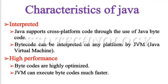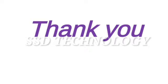Interpreted. Java supports cross-platform code through the use of Java bytecode. Bytecode can be interpreted on any platform by JVM, i.e. Java Virtual Machine. High performance. Bytecodes are highly optimized and Java can execute bytecodes much faster. Today we discussed characteristics of Java.